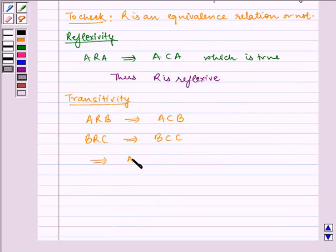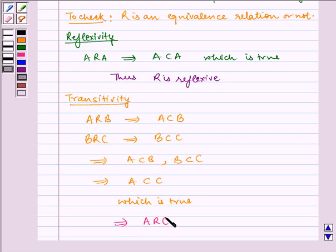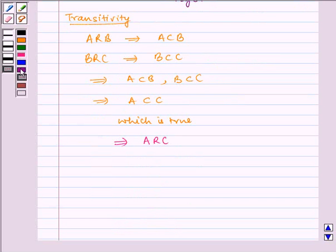Therefore A R C, which means A is contained in B and B is contained in C, which implies A is contained in C. This is true, hence R is transitive.